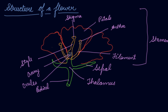In the center of the flower rises a flask-shaped structure called the pistil or carpel. This is the female part of the flower. Its base is slightly swollen and is called the ovary. The short tube-like upper part is known as the style, and above it is the stigma. The stigma receives the pollen grains from the anthers. Inside the ovary are small bead-like structures called ovules.